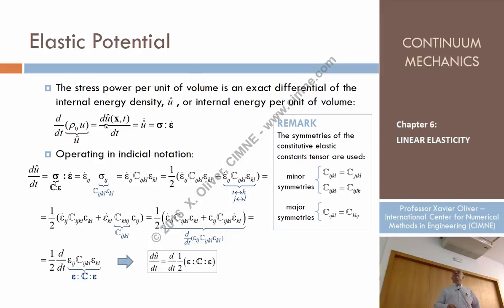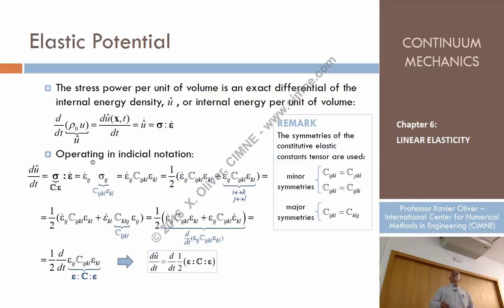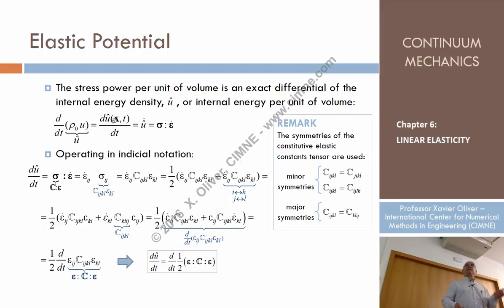That is what, in this elastic theory, gives rise to what we call the elastic potential. For simplification, from now on instead of dealing with the specific internal energy (energy per unit of mass), we'll talk about the density of energy per unit of volume. Multiplying by density, we obtain that the time derivative of U-hat equals sigma double-dot epsilon-dot. Now let's see what happens when we replace sigma by C times epsilon — that is the constitutive equation. We have that this differential is epsilon : C : epsilon-dot.